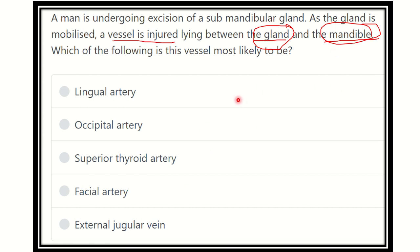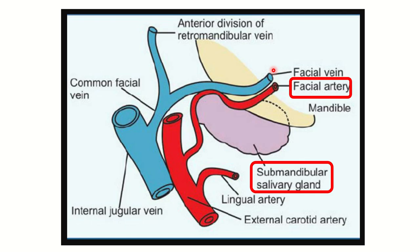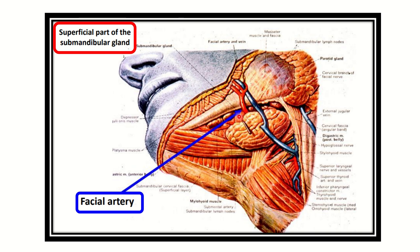Here we can see the mandible, and here we can see the submandibular salivary gland. Between them we can see a structure which is the facial artery. This facial artery is arising from the external carotid artery. So the facial artery, which is a branch of the external carotid artery, lies between the mandible and the submandibular salivary gland.